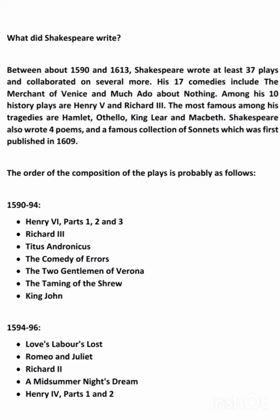What did Shakespeare write? Between about 1590 and 1630, Shakespeare wrote at least 37 plays and collaborated on several more. His 17 comedies include The Merchant of Venice and Much Ado About Nothing. Among his 10 history plays are Henry V and Richard III. The most famous among his tragedies are Hamlet, Othello, King Lear, and Macbeth. Shakespeare also wrote four poems and a famous collection of sonnets, which was first published in 1609.